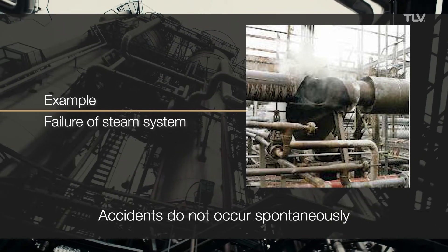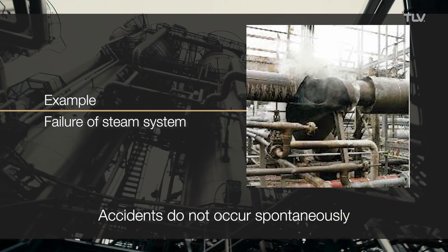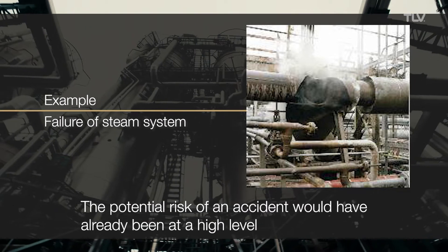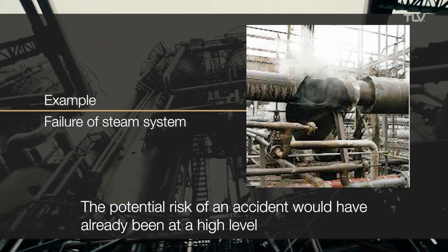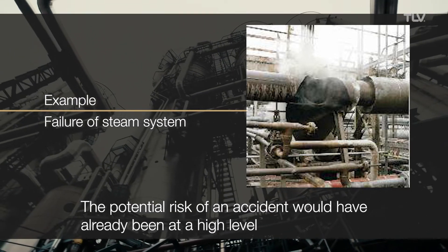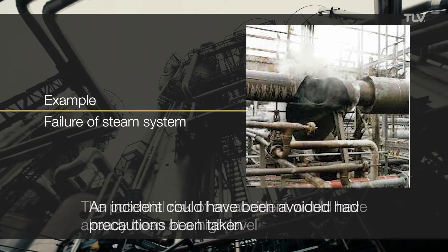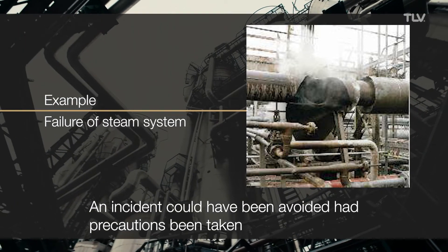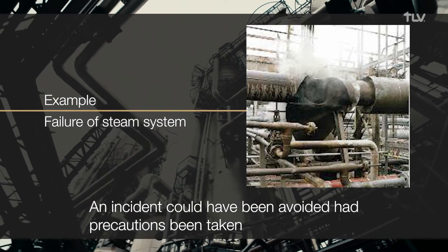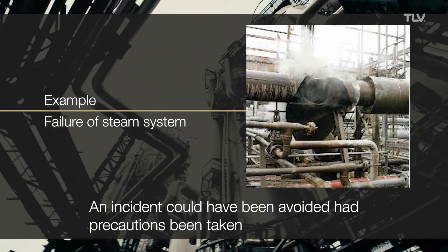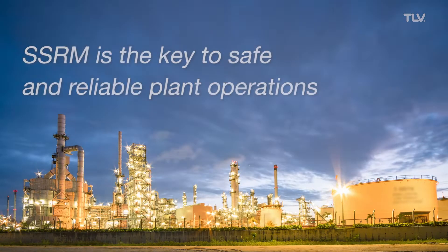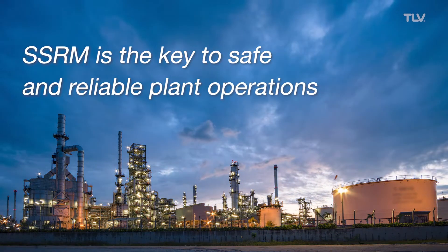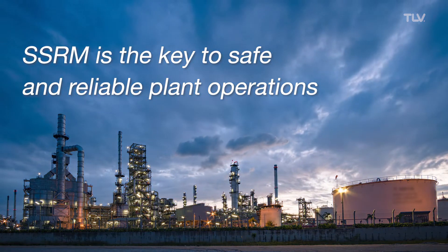Most accidents do not occur spontaneously without warning. Prior to the event, the potential risk would have already been at a high level. If these risks had been mitigated well in advance, these accidents would have been avoided. Utilizing SSRM is the key to safe and reliable plant operations.